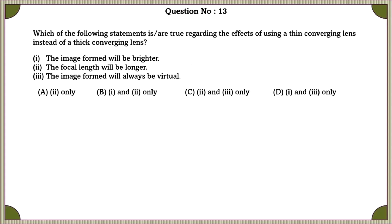Question 13. Which of the following statements is or are true regarding the effects of using a thin converging lens instead of the thick converging lens? First one, the image formed will be brighter. A thick lens absorbs more light, so the image appears dimmer. Whereas, a thinner lens lets more light through, resulting in a brighter image.